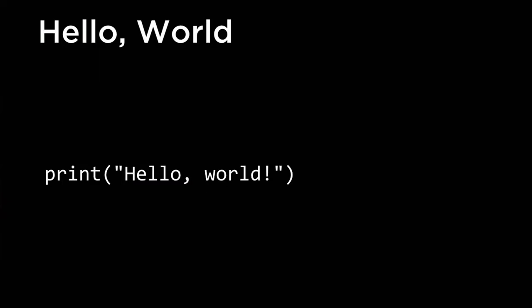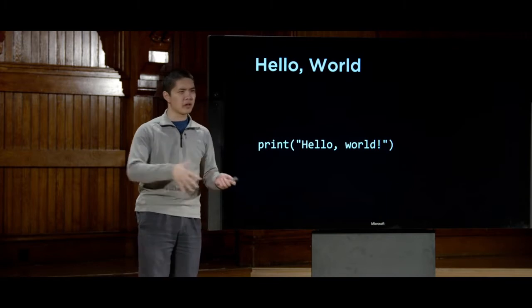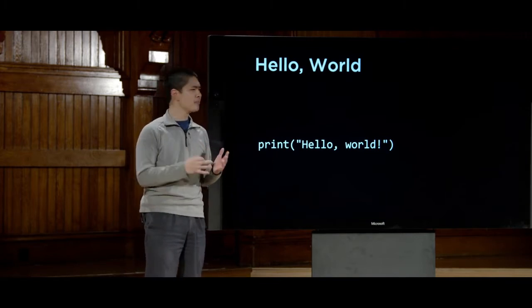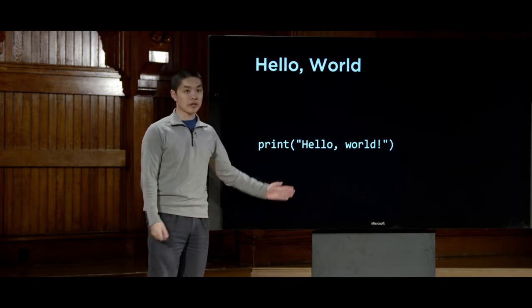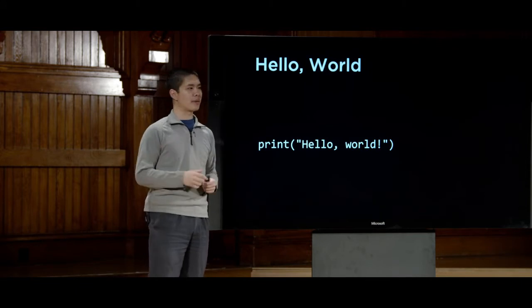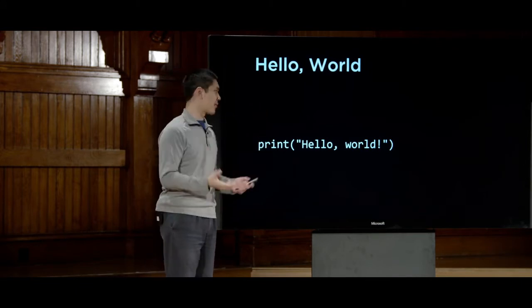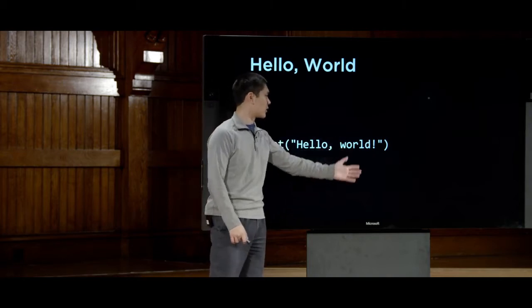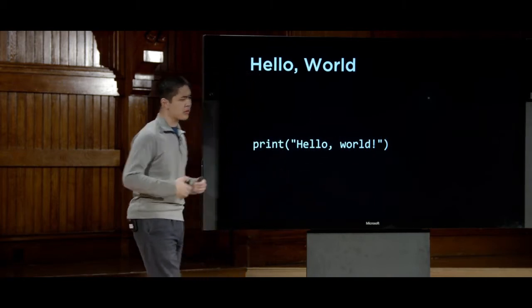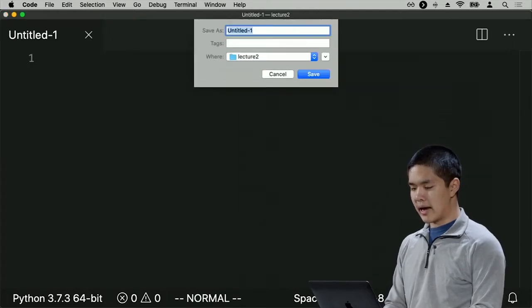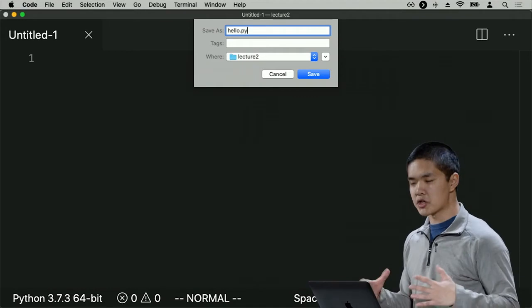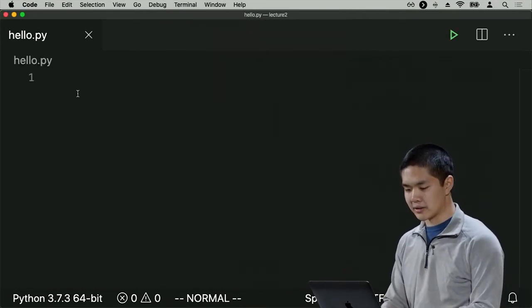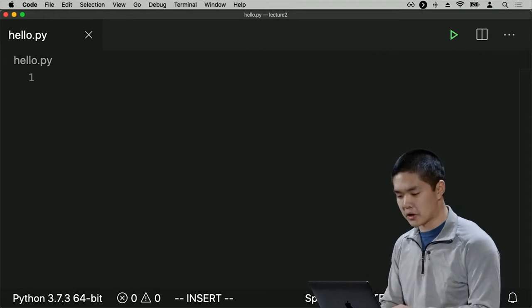We begin with our very first Python program — just a program that says 'hello world.' We're going to be writing it in a text file, and the program is just a single line. We have a function called print built into Python, and like many other languages, functions take their arguments inside of parentheses. The argument to the print function is just the words 'hello world' followed by an exclamation point.